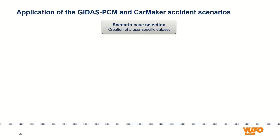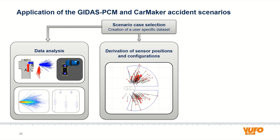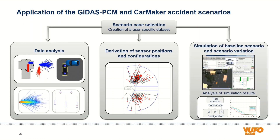GEDAS PCM or CarMaker data can also be used for data analysis. With this data the focus is on the dynamics of the participants. For example, trajectories, velocities or accelerations can be analyzed in detail. Furthermore, several participants of a scenario can be analyzed at a defined time, and sensor positions and configurations can be derived. Another possibility is to use the scenario as a basis and to modify defined parameters of the scenario, such as the positions, the speeds or accelerations of the participants. ADAS and autonomous driving functions can then be tested in a simulation environment for a large number of accident cases and their variations.